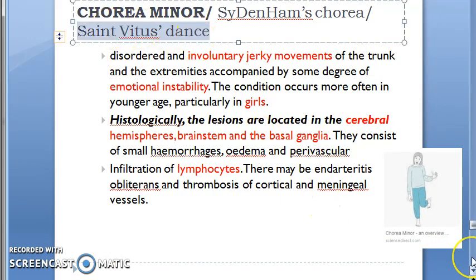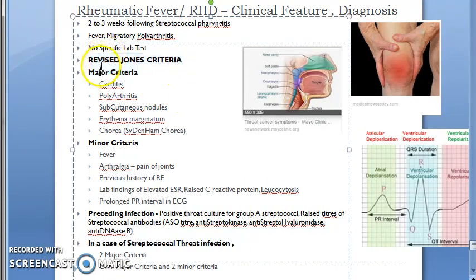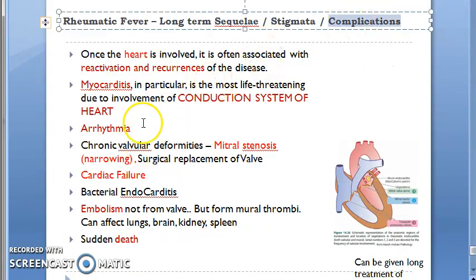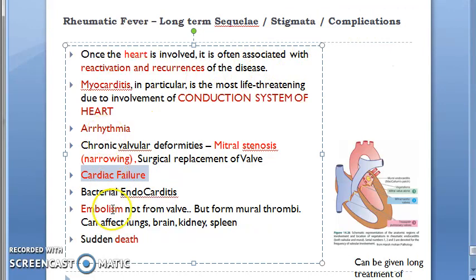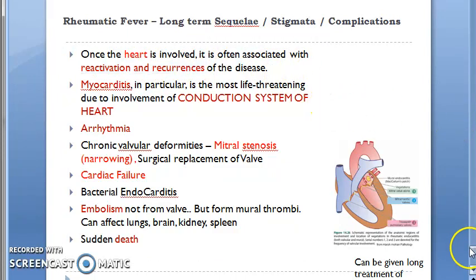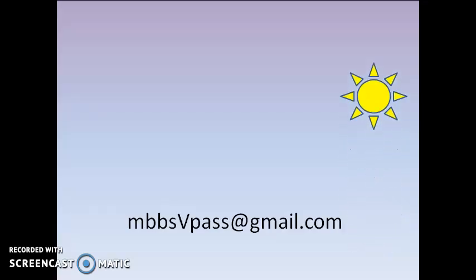For diagnosis, the revised Jones criteria require at least two major criteria, or one major and two minor criteria, in the context of a streptococcal throat infection to indicate rheumatic fever. Complications to remember include arrhythmia, reactivation and recurrence of disease, cardiac failure, bacterial endocarditis, embolism, and death.